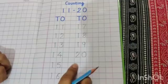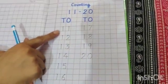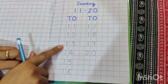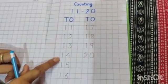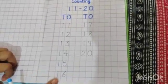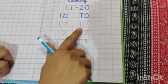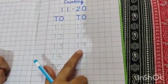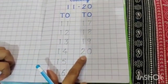Let's revise kids. 1, 1, 11. 1, 2, 12. 1, 3, 13. 1, 4, 14. 1, 5, 15. 1, 6, 16. 1, 7, 17. 1, 8, 18. 1, 9, 19. 2, 0, 20.